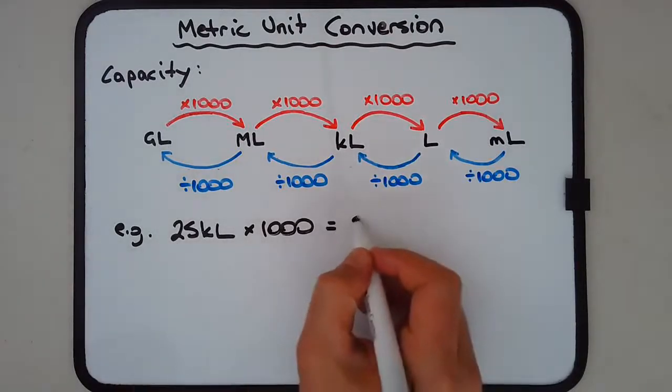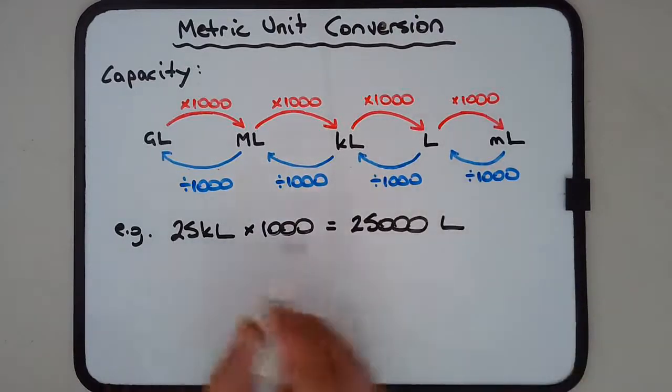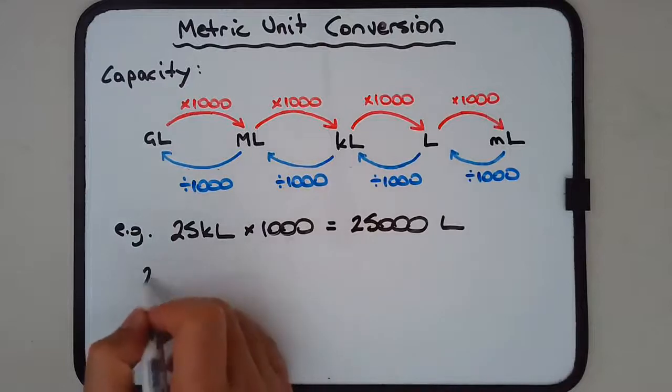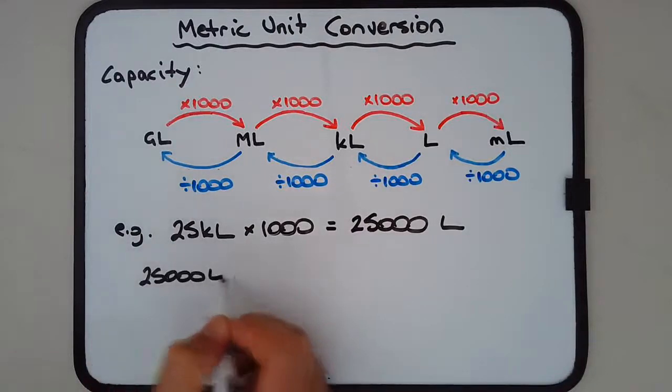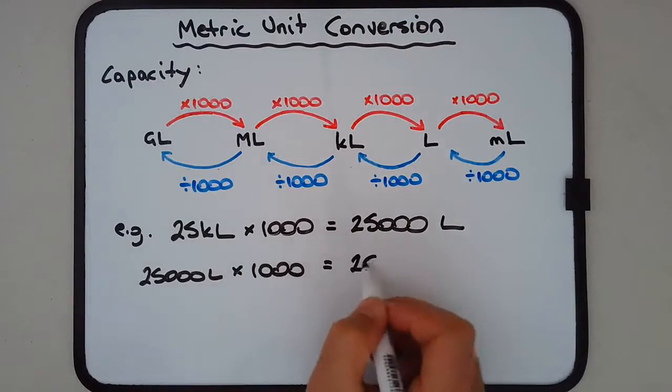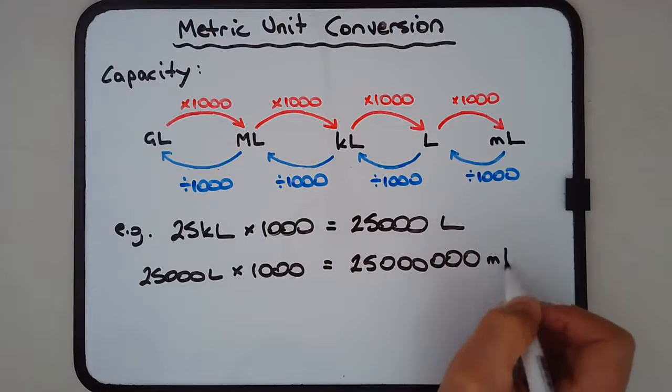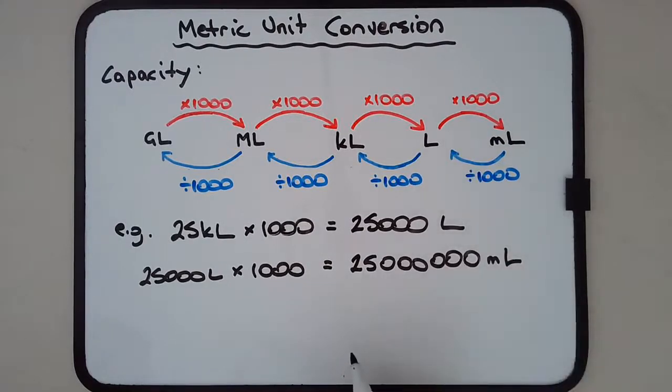Now liters into milliliters: 25,000 liters multiplied by a thousand again. We're just adding another three zeros, giving us 25,000,000 milliliters, small m and large L.